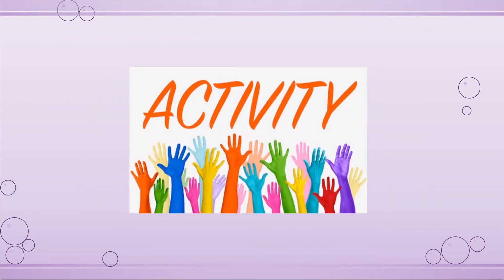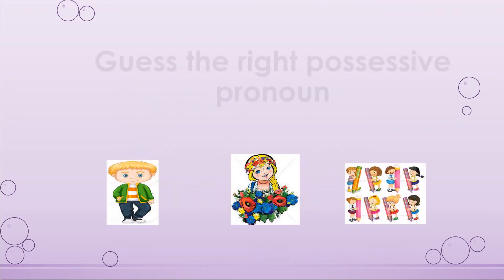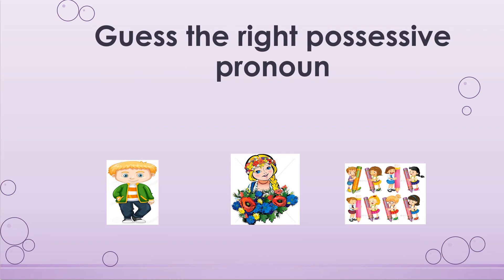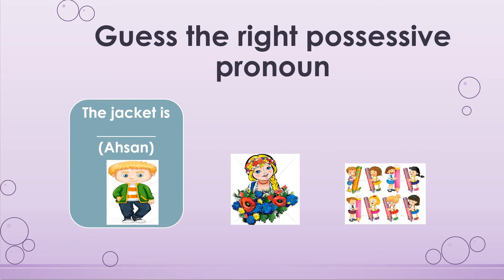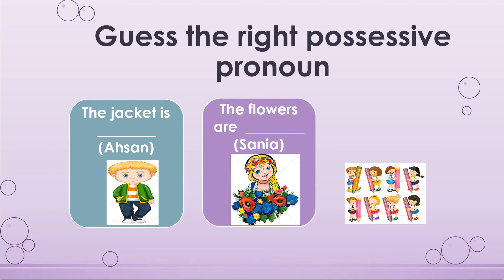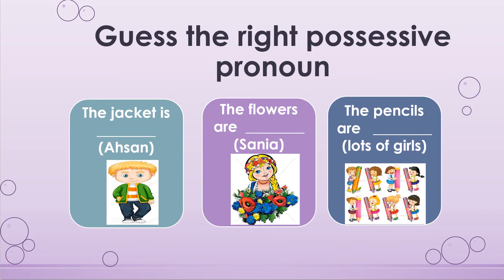Here is an activity you can play with your students to teach possessive pronouns. Show pictures and have students guess the right possessive pronoun. For example, in one picture it says 'The jacket is ___' and the name given is Asson, who is wearing the jacket. Students have to guess the correct pronoun — 'The jacket is his.' This way you can tell whether students have understood or not.